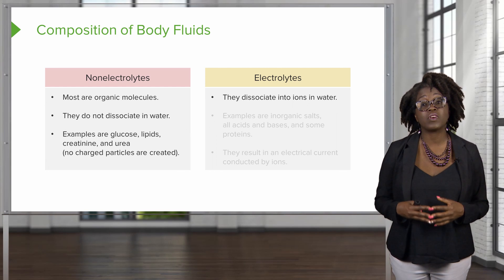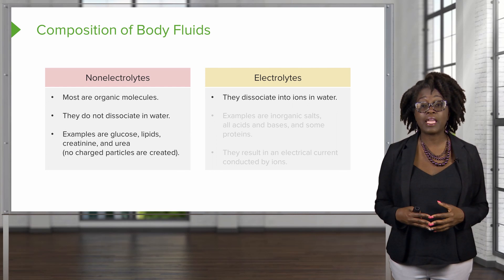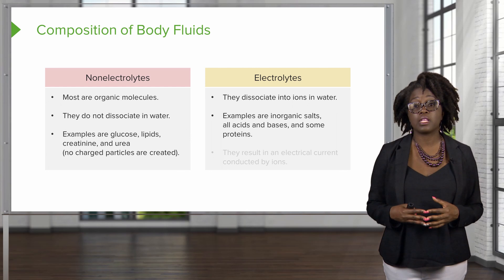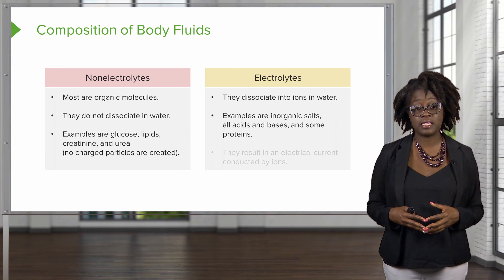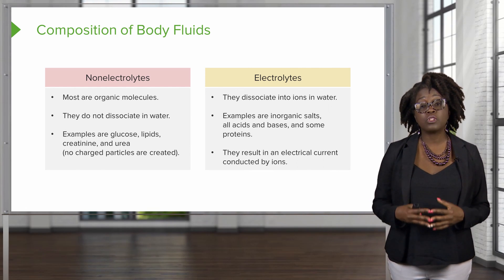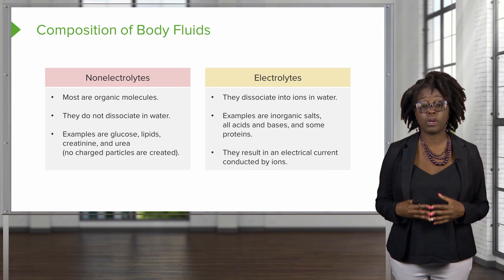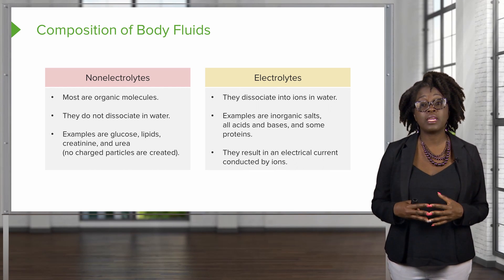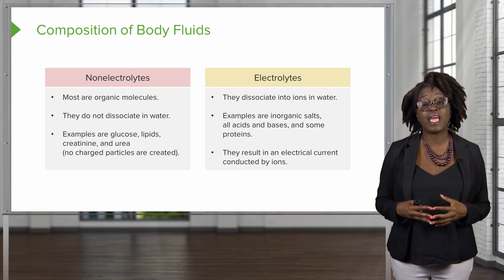We also have electrolytes. Electrolytes are going to dissociate into separate ions when they are placed in water. Examples of electrolytes include inorganic salts, all of our acids and bases, and also some of our proteins. The electrolytes that break down into ions are then able to conduct electrical currents, which is especially important for our electrically excitable cells in our body, such as our neurons and our muscle cells.